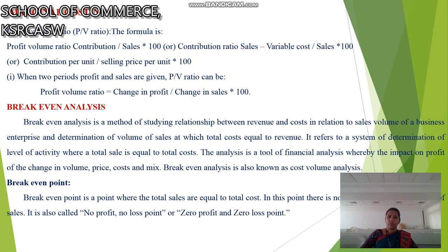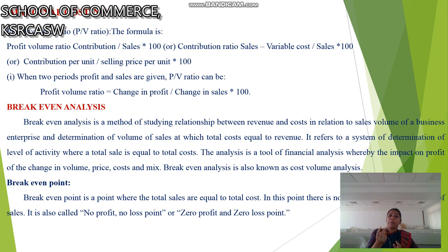Next is profit volume ratio. Profit volume ratio equals contribution divided by sales into 100, or sales minus variable cost divided by sales into 100, or contribution per unit divided by selling price per unit into 100. When two periods' profits and sales are given, the PV ratio equals change in profit divided by change in sales into 100.